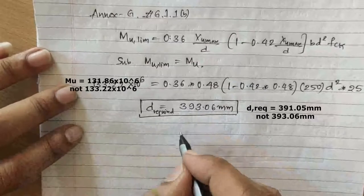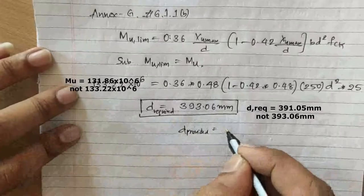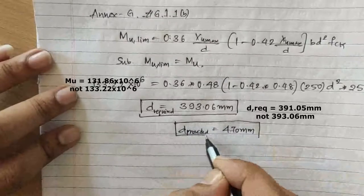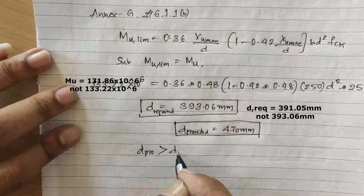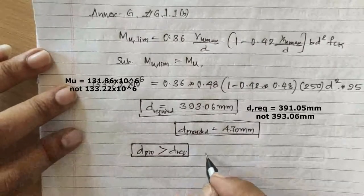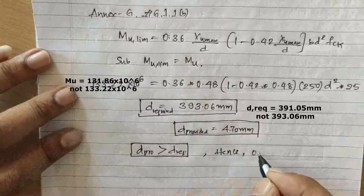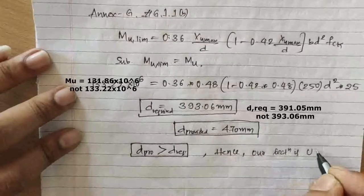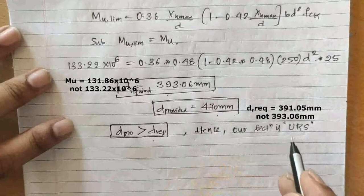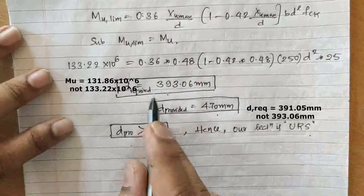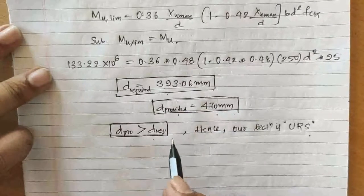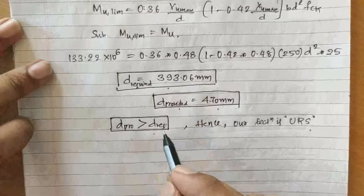d_provided = 470 mm, which is greater than d_required = 393.06 mm. Hence our section is under-reinforced, meaning steel will yield before concrete crushes. If d_required were more than d_provided, we would need to redesign by increasing the depth.